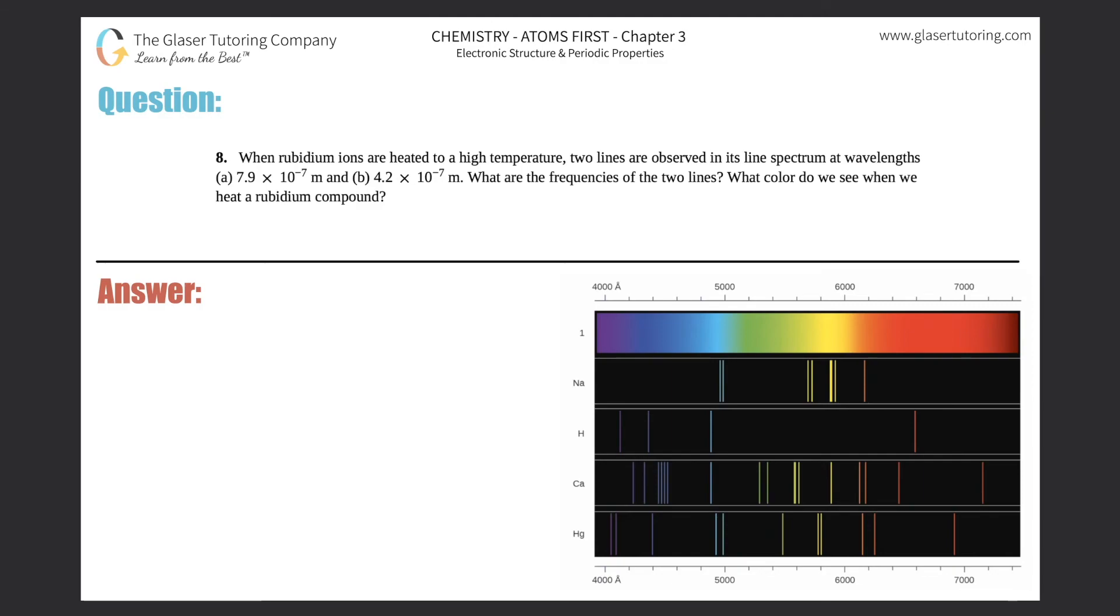Number 8: When rubidium ions are heated to a high temperature, two lines are observed in its line spectra at wavelengths: (a) 7.9 × 10^-7 meters and (b) 4.2 × 10^-7 meters. What are the frequencies of these two lines? And what color do we see when we heat a rubidium compound?